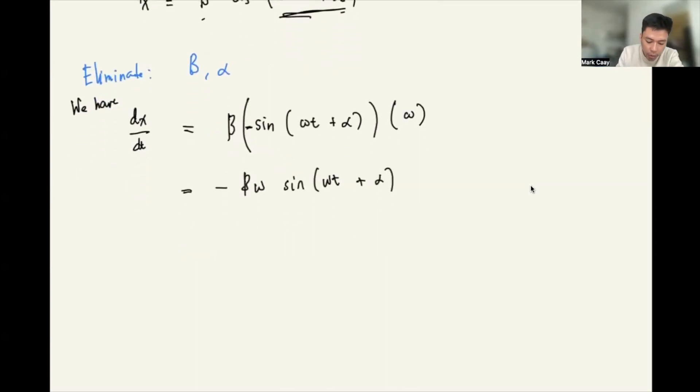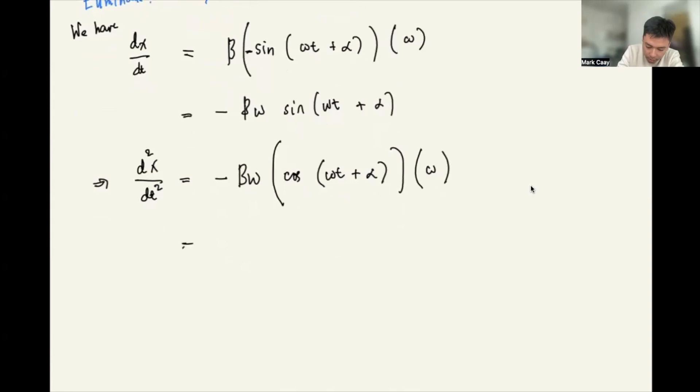How about if we want to take the second derivative? So this is d squared x dt squared. The derivative of sine is cosine of omega t plus alpha times omega. So this becomes negative omega squared B cosine of omega t plus alpha.